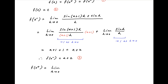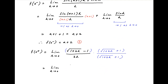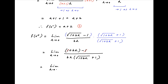Now, the right-hand limit of f(x) at x = 0 is equal to limit h→0 of (√(1+bh) − 1) divided by bh. Multiplying and dividing by the conjugate of the numerator, which is (√(1+bh) + 1), the numerator becomes (1+bh − 1), and the denominator becomes bh times (√(1+bh) + 1). This simplifies to limit h→0 of 1 upon (1 + √(1+bh)).